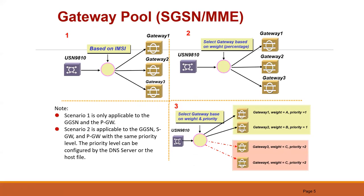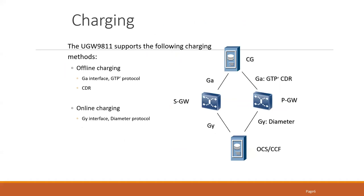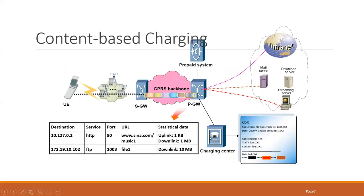Gateway pool selection is based on IMSI, percentage, or weight and priority. This applies when selecting a GGSN or PGW. Regarding charging: offline charging uses the Ga interface, and online charging uses the Ro interface for both GGSN and SGSN. This is something we've already discussed.